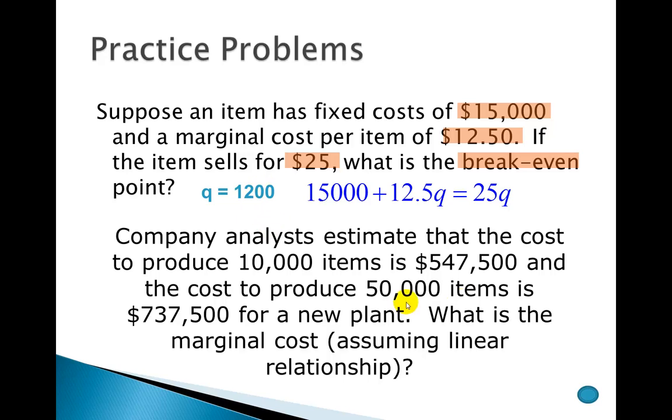And then the second problem here on this slide, the information that I'm seeing is we've got, when I have 10,000 items, my cost is $547,500. And then when I'm producing 50,000 of those things, my cost is $737,500. And so what's my question asking for? It's asking for the marginal cost. And I remember marginal cost is slope, and we're assuming a linear relationship here.